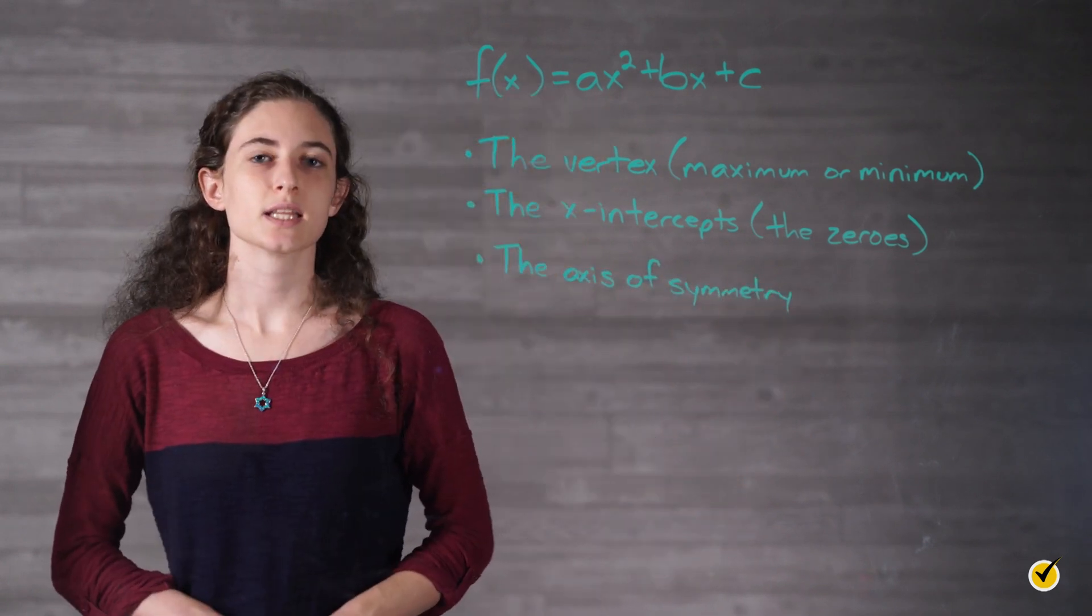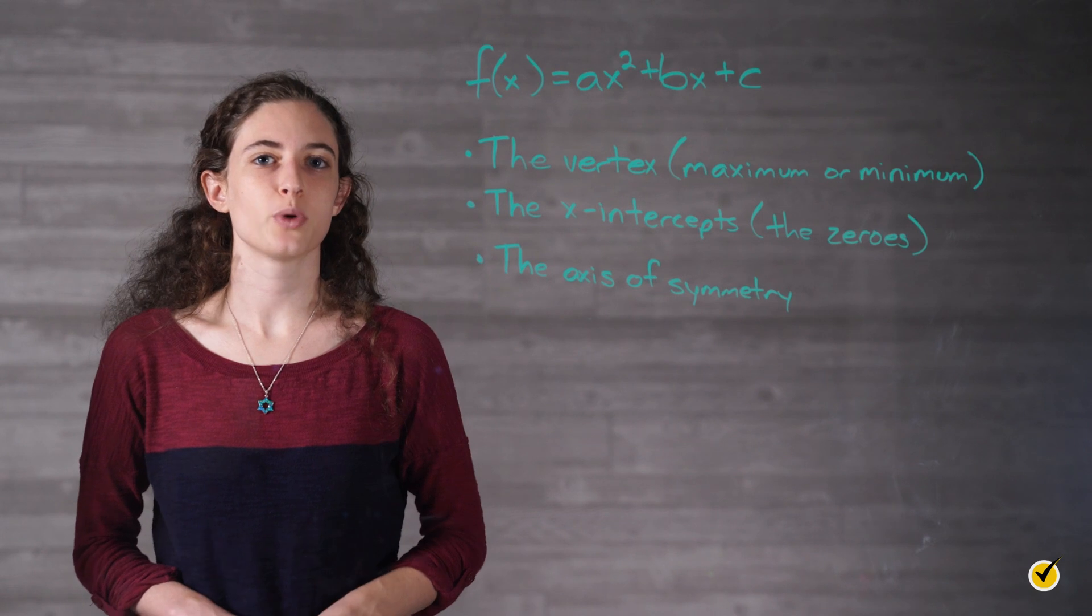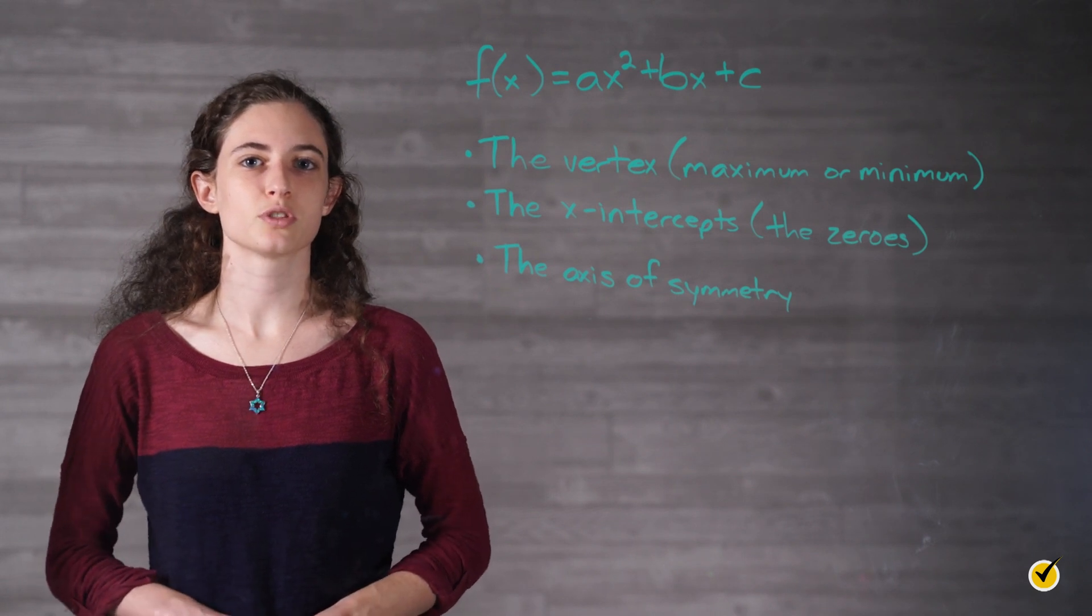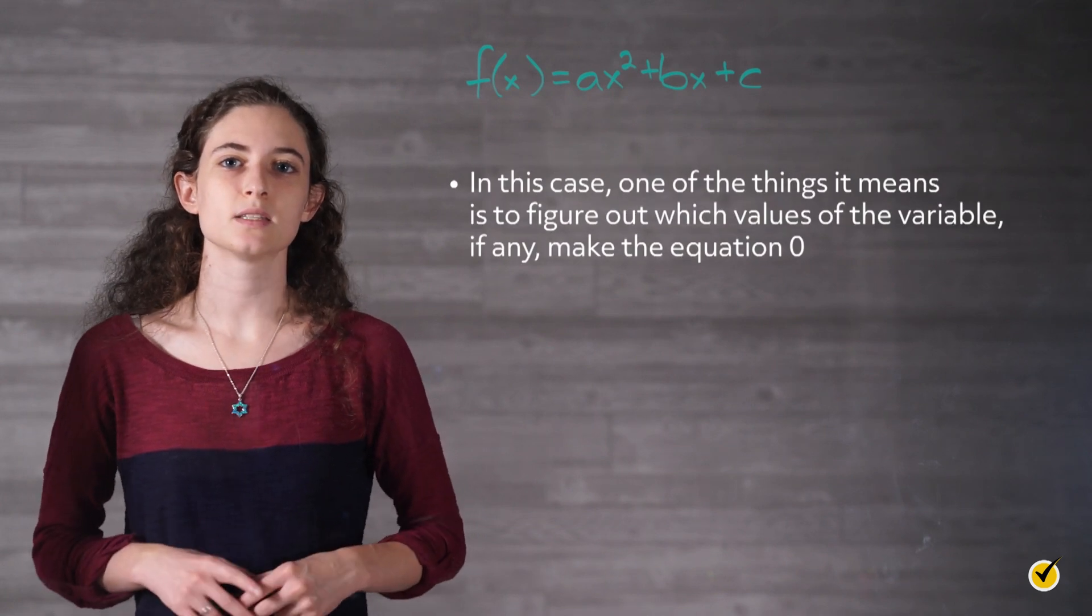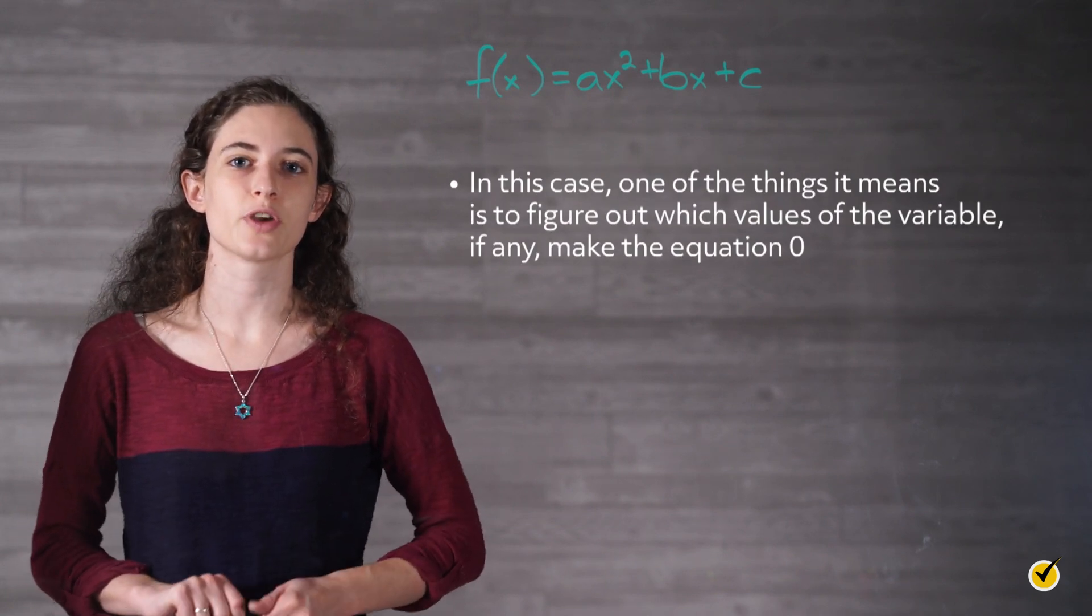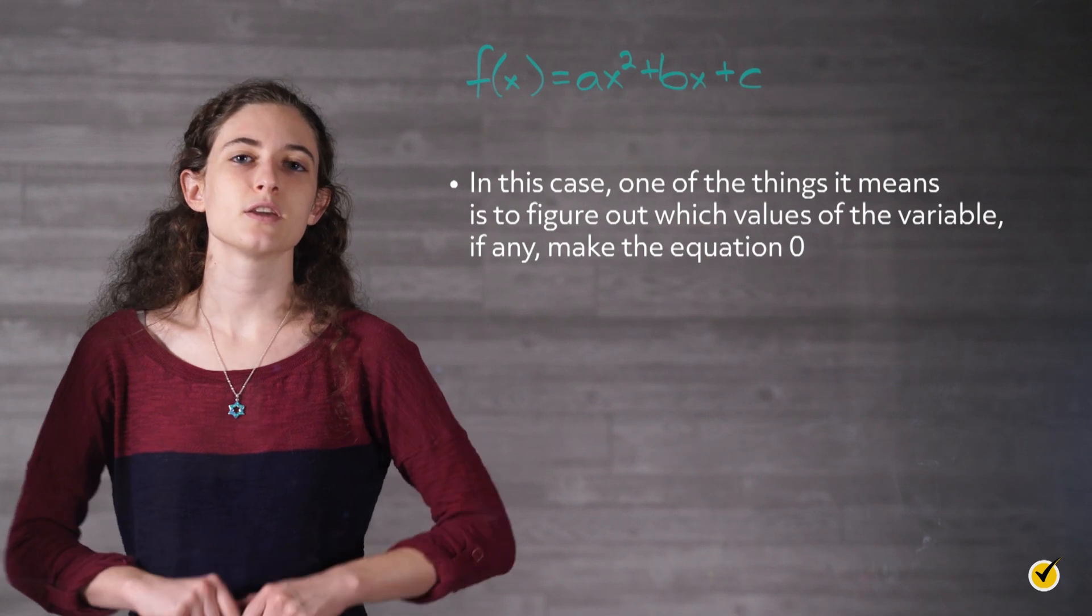Now that we have a little background, let's dive further into solving quadratic equations and interpreting the results. So what do we mean by solving? In this case, one of the things it means is to figure out which values of the variable, if any, make the equation 0.